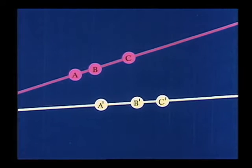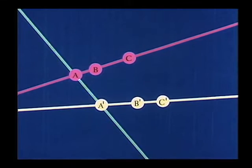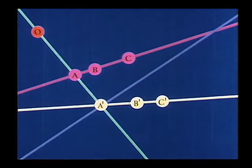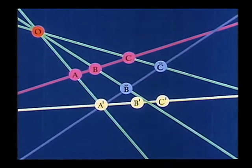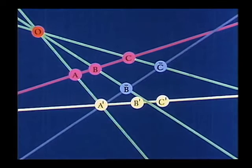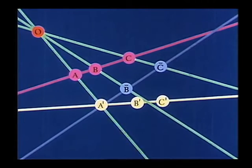However, if the first perspectivity maps one of the given points directly onto its final image, the problem is then reduced to one of mapping only two points onto two points. And this can be done by the second perspectivity.